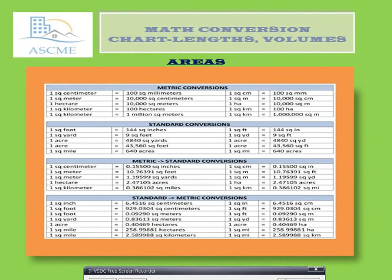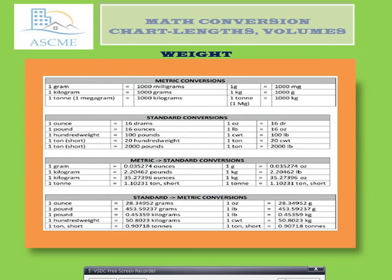For area, we also calculate using four steps: metric conversion and metric-to-standard conversion. The units include square meters, square centimeters, and square kilometers, as shown in the chart.